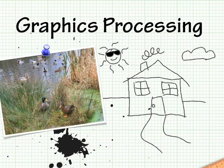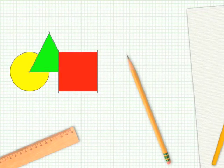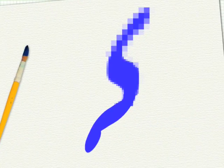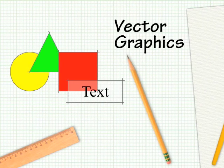Today I'm going to talk about graphics processing, or how computers deal with pictures. Now there are two types of pictures that computers use: one is drawing and the other is painting. But I'm going to start off by looking at drawing.